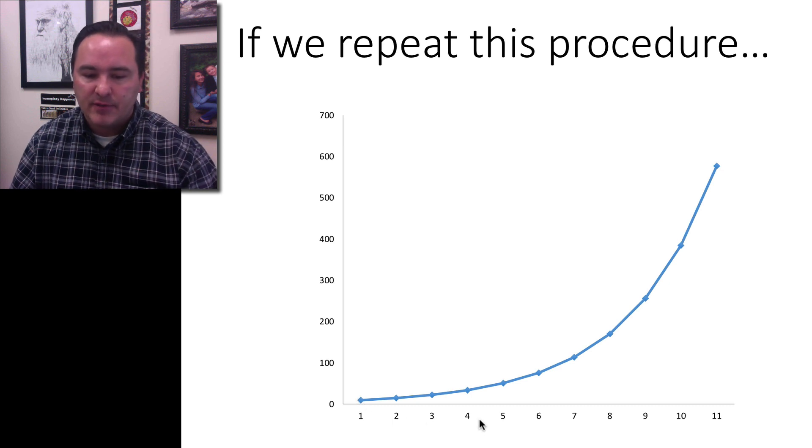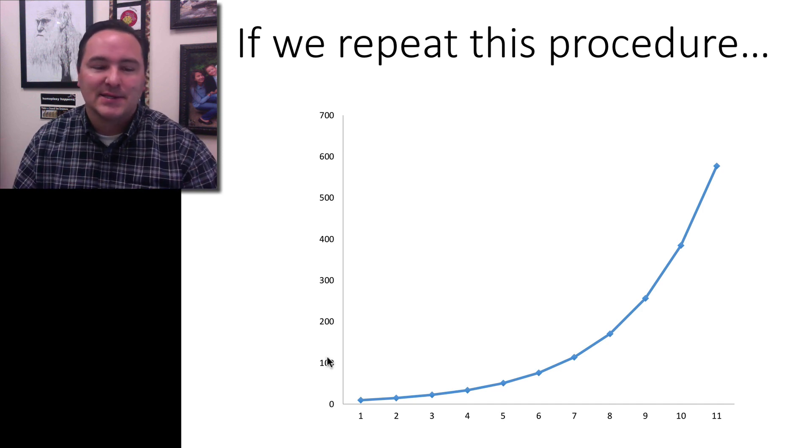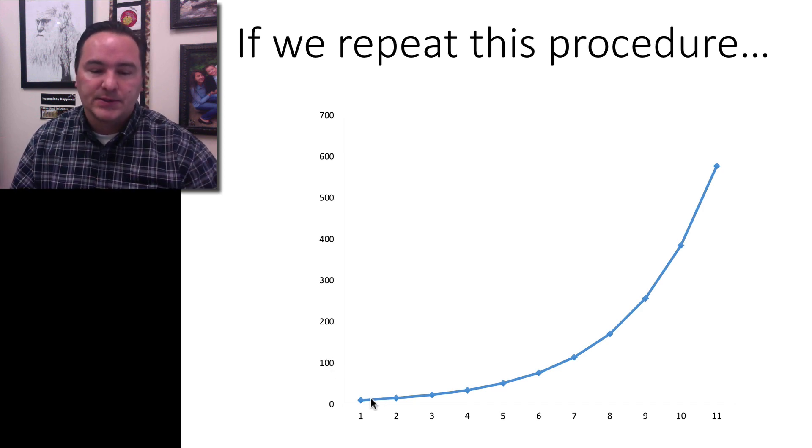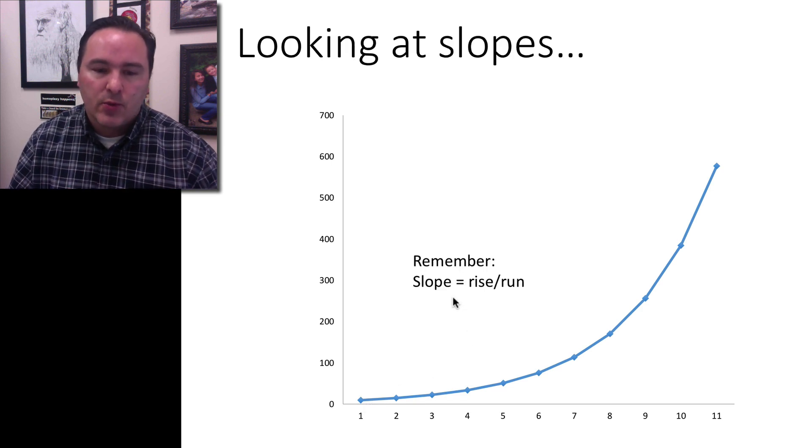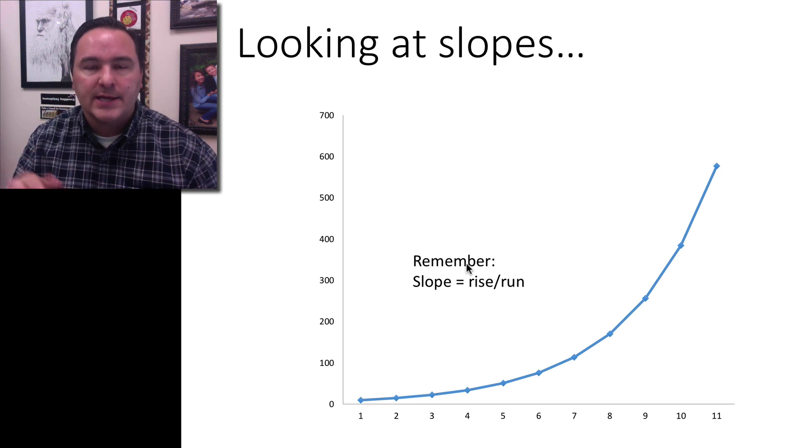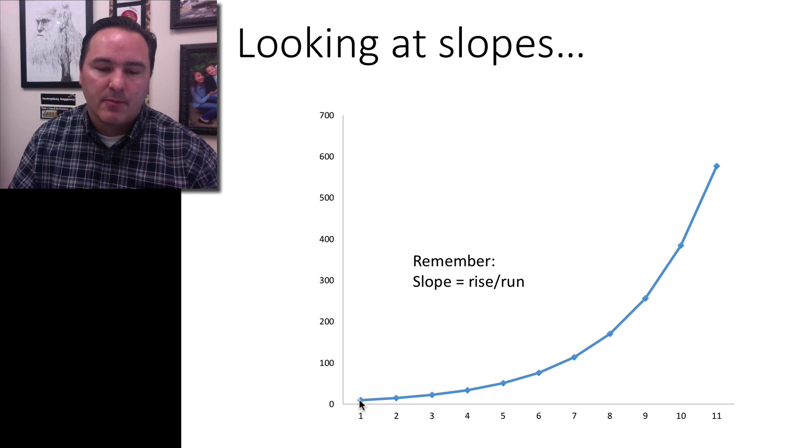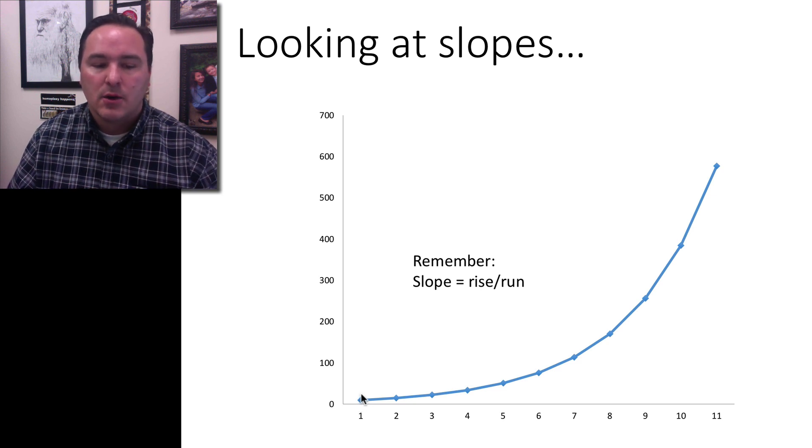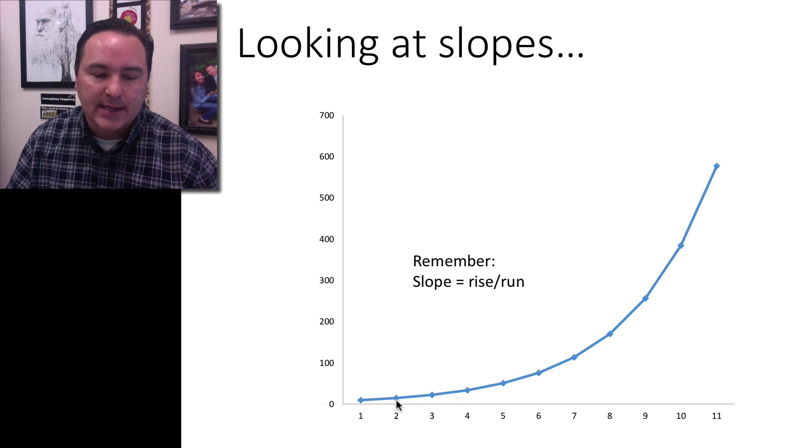Here we have the number of generations on the x-axis, and on the y-axis, the number of pennies, or rabbits in this case, that would be reproduced. If you start to draw lines, you can remember that the slope of the curve is determined by the rise over the run. So your increase in y over your increase in x.